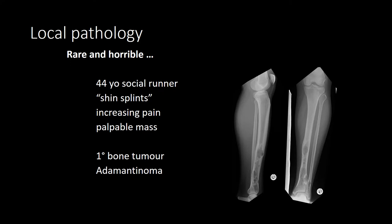Occasionally we are faced with the rare and the serious, and we need to perform a full examination and not simply accept sciatica-type symptoms as spine pathology. Here is an example of a 44-year-old recreational runner who complained of shin splints for a prolonged period with increasing pain and finally a palpable mass in his distal tibia. This turned out to be a primary bone tumor.